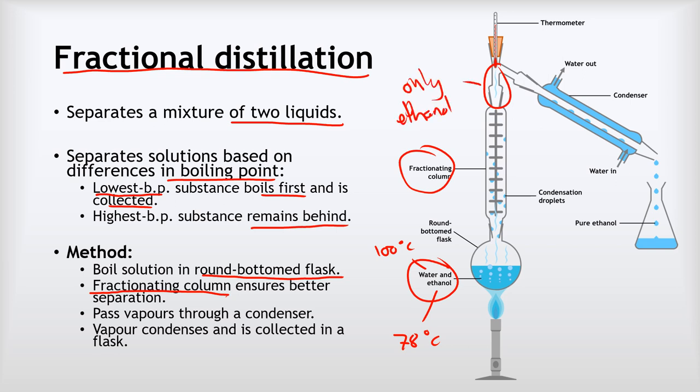Those ethanol vapors will hit the cold wall of the condenser where they'll condense back into a liquid, and we'll collect pure ethanol over here whilst most of the water remains behind in the round bottom flask.